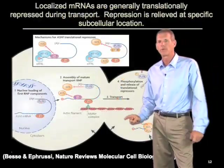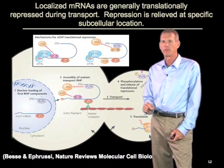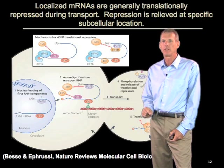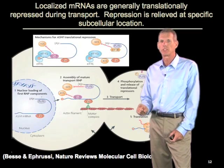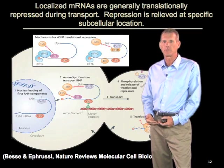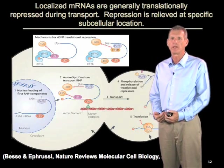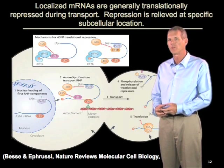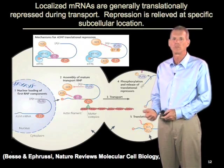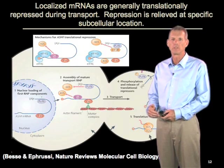Another important general principle of RNA transport is that mRNAs are translationally repressed during the transport process. This is important for two reasons. First, by repressing the mRNA so it is not translated prior to localization, you target the production of the protein to the specific region of the cell where you would like to produce it. Second, by repressing translation, you limit ribosome interaction with the mRNA, decreasing the total molecular mass of the complex that needs to be moved through the cell, which presumably greatly facilitates transport to distal regions.